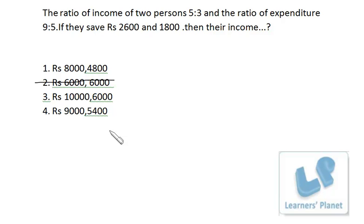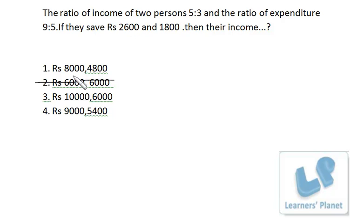If they save rupees 2600 and 1800 — remember, income minus saving equals expenditure. Now suppose option one is correct with incomes 8000 and 4800. If you deduct 2600 from 8000 and 1800 from 4800, you get the expenditure. The expenditure ratio is given as 9:5.